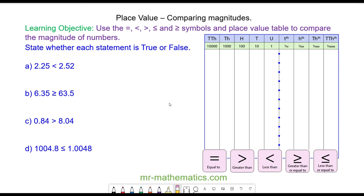Hello and welcome to our lesson on comparing the size of numbers using the place value table. To begin with we're going to use these symbols here to say whether one number is bigger, smaller or equal to another, and we're going to do this by arranging each number in the place value table.